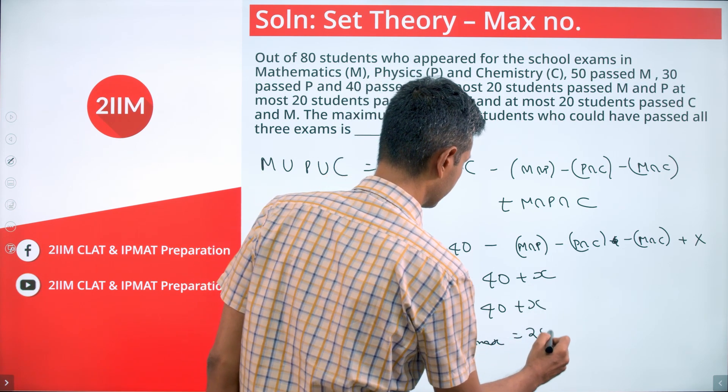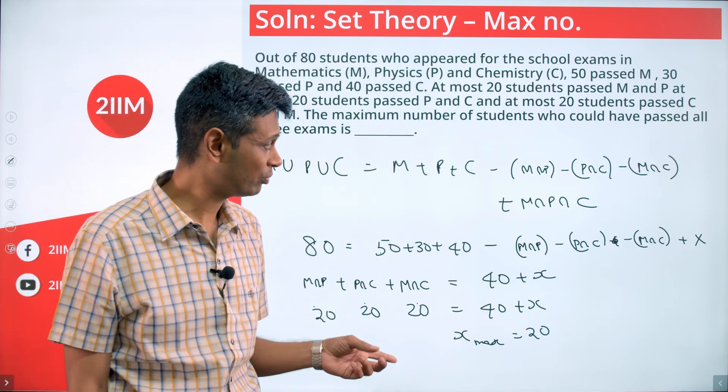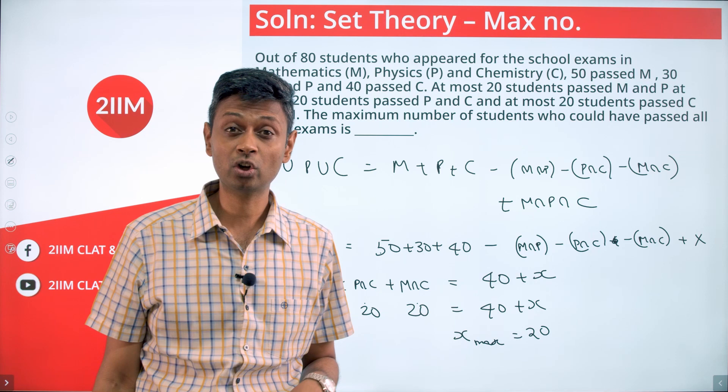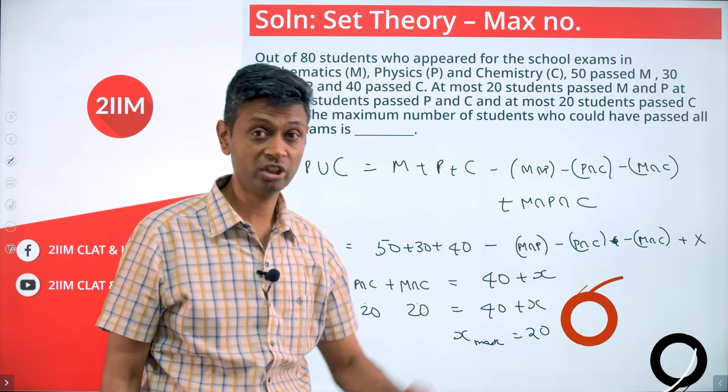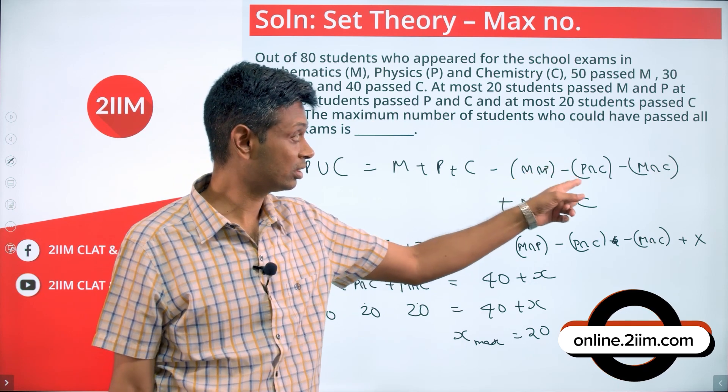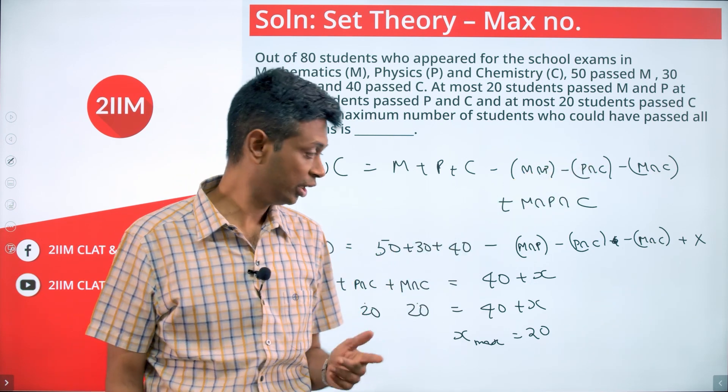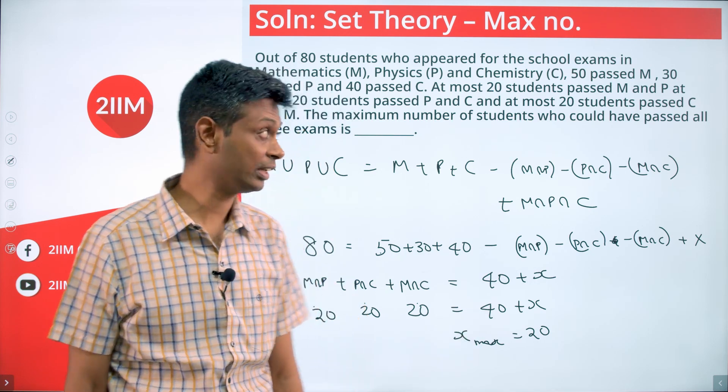So the maximum possible value of x is 20. Remember that x is the intersection of M intersection P intersection C. That cannot be higher than either this or this or this, and so 20 is the maximum it can take. Anyway, it looks like 20 could work. I don't want to leave it at that. I want to plug in 20 and see if the diagram works.